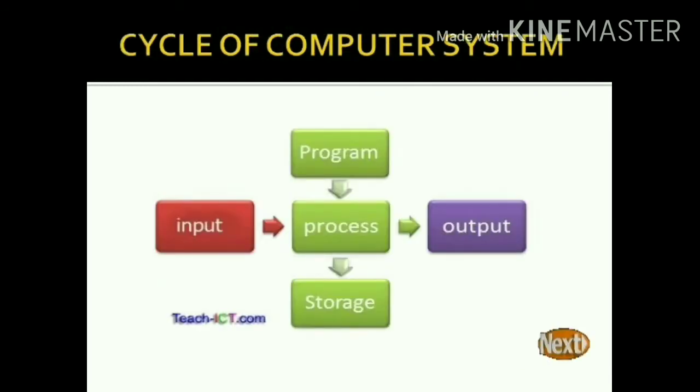As you can see in this picture, this is the cycle of the computer system — computer system kis tarike se work karta hai. Sabse pahele input, which we give to the computer. And then computer does the processing of that data through the CPU, and then finally the computer produces the output. So this is the cycle of the computer system — in this way the computer system works.